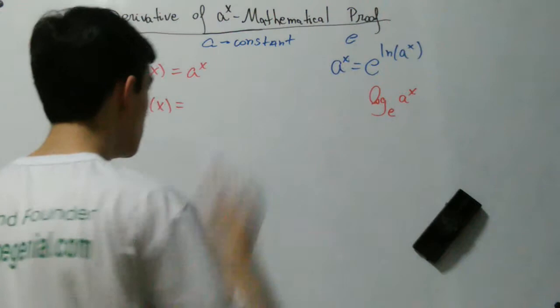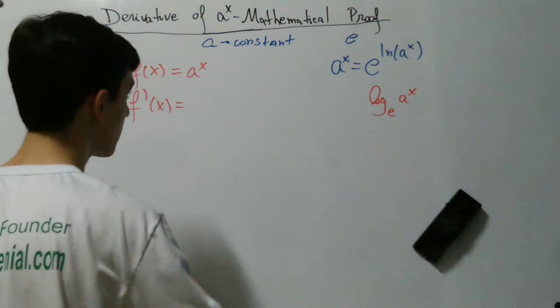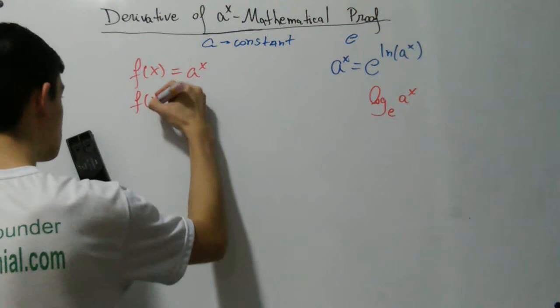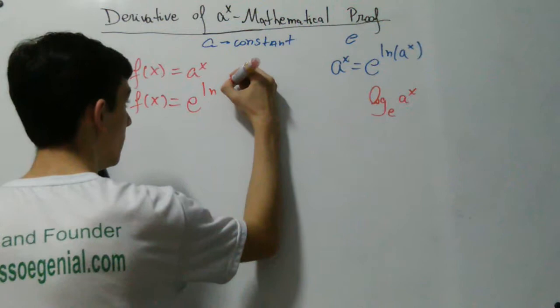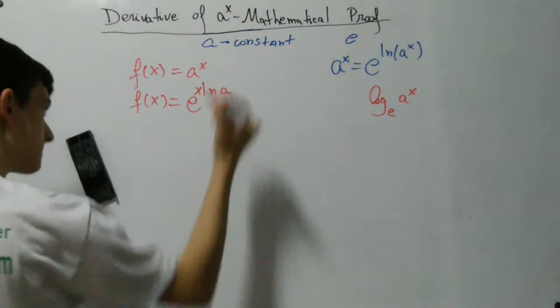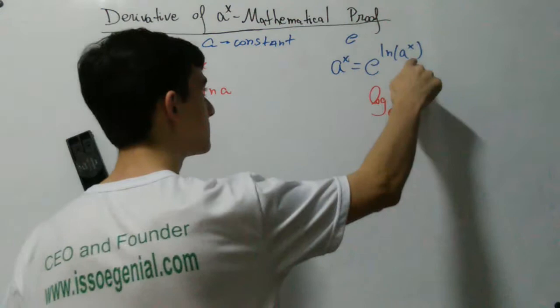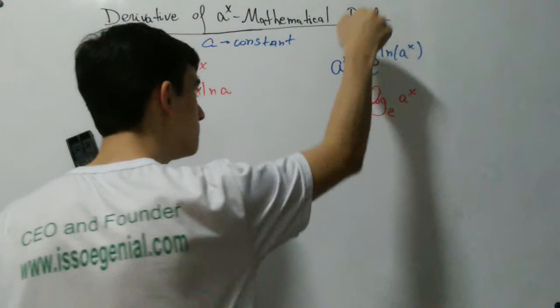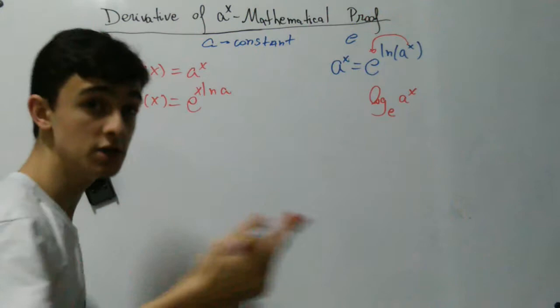So we are going to rewrite our function. f of x is going to be equal to e raised to natural log of a to the x. And here we are going to use another property of logarithms: if we have an exponent on the argument of the logarithm, we can put this exponent multiplying the logarithm. It's a property of logarithms.